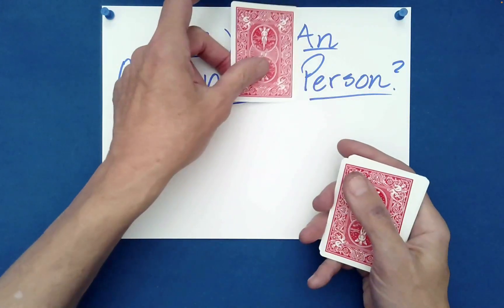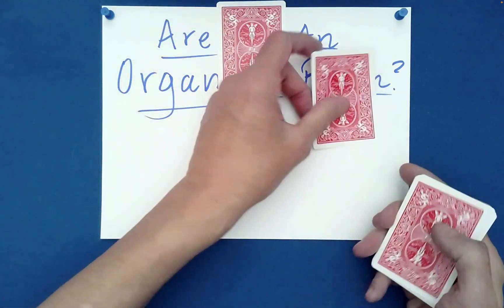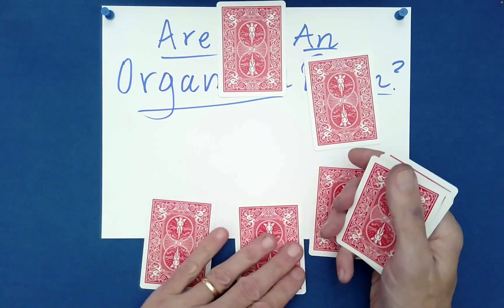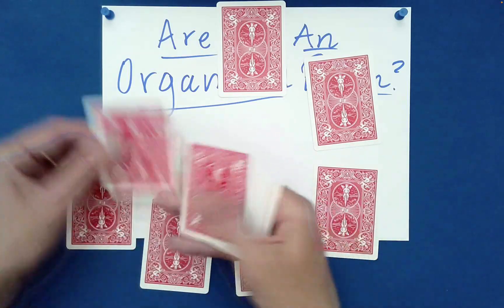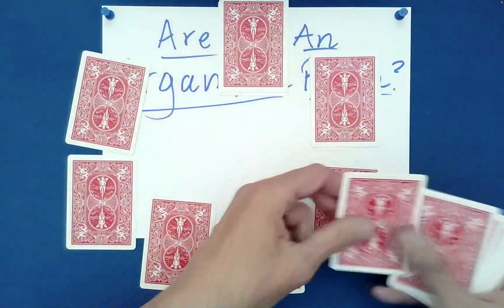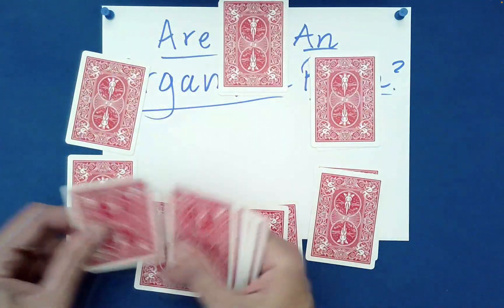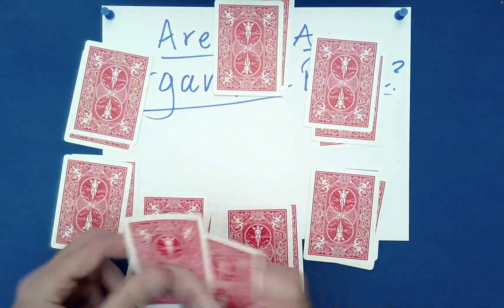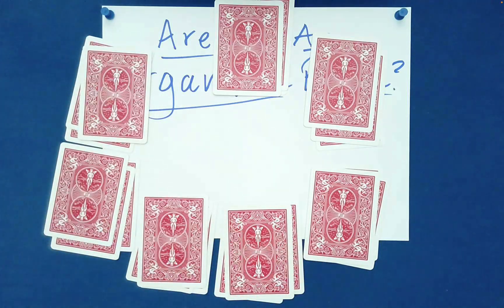So we're going to do a final dealing out into seven piles. Seven piles. Once again, let's stay in camera view. Very good. Seven piles. And we're going to now find out what level of organizational skills you actually have developed during your life.